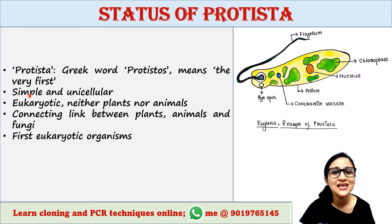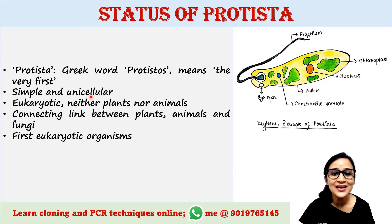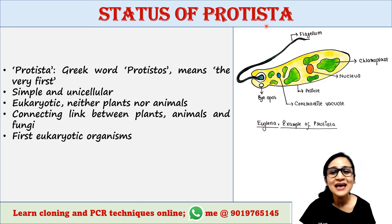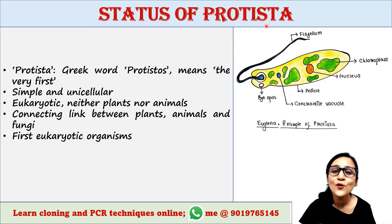Organisms belonging to Protista are very simple and unicellular. They are known as protists. Protists are eukaryotic organisms who are neither plants nor animals. Protists are assumed as a connecting link between plants, animals, and fungi.